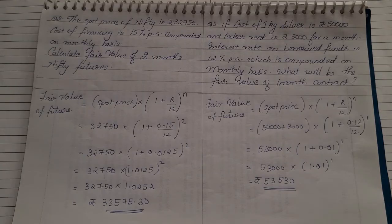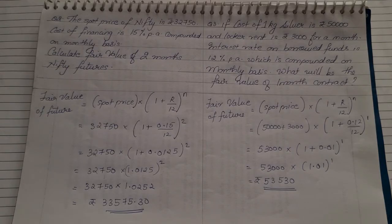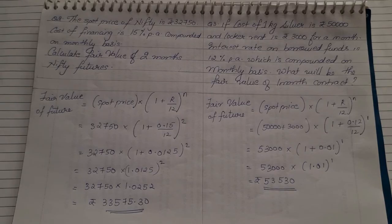With this, the sums based on future value under compound interest are completed. In this video, we learned two methods to calculate the fair value of futures — simple interest and compound interest. Approximately 15 marks will come from this chapter. Just note down the formula and substitute the values. Stay tuned — there is one more topic to be completed under commodity and derivative market, which is based on hedging. Thank you.